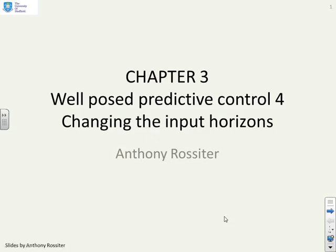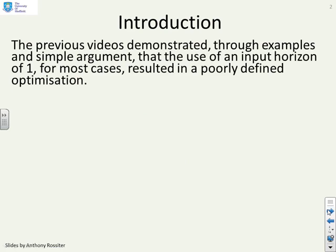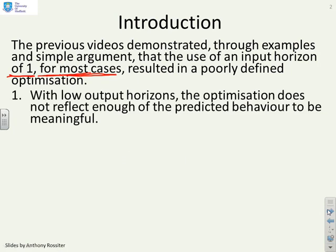This video looks at the impact of changing the input horizons. The previous videos have demonstrated through many examples and some argument that the use of an input horizon of 1, for most cases — and I'm emphasising for most cases, not all — resulted in a poorly defined optimisation.